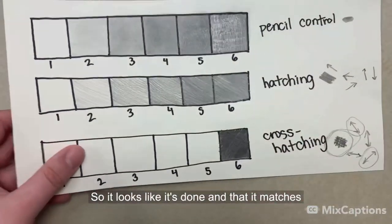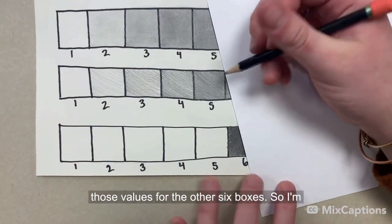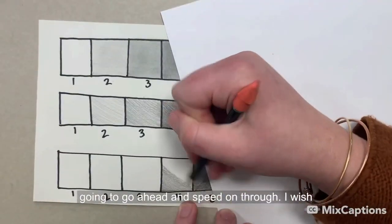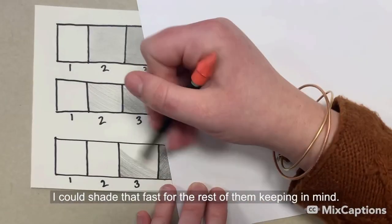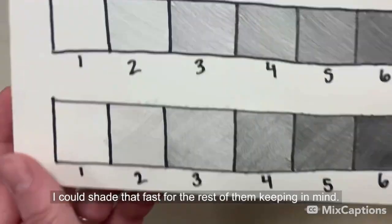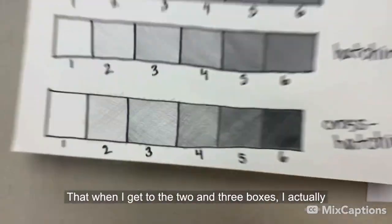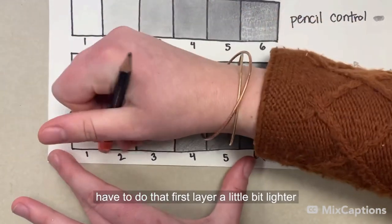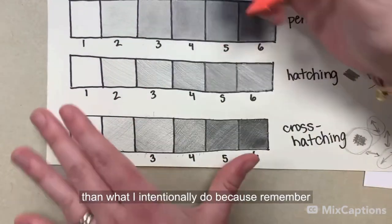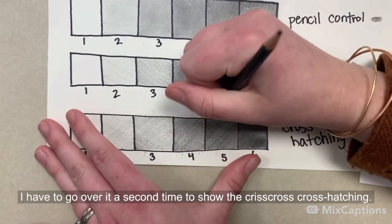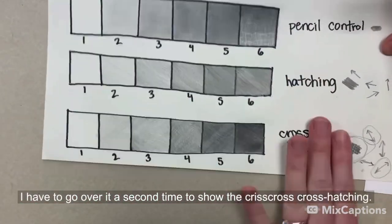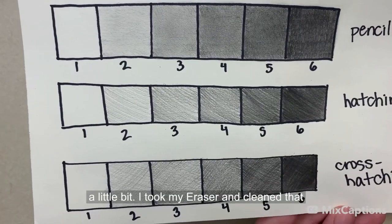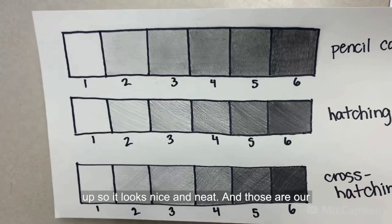So it looks like it's done and that it matches those values for the other six boxes. So I'm going to go ahead and speed on through. I wish I could shade that fast for the rest of them, keeping in mind that when I get to the two and three boxes, I actually have to do that first layer a little bit lighter than what I intentionally do. Because remember, I have to go over it a second time to show the crisscross cross hatching. So as you saw there, I went over the lines a little bit. I took my eraser and cleaned that up so it looks nice and neat.